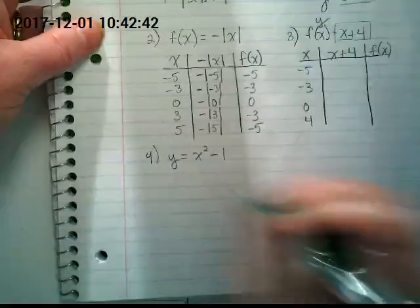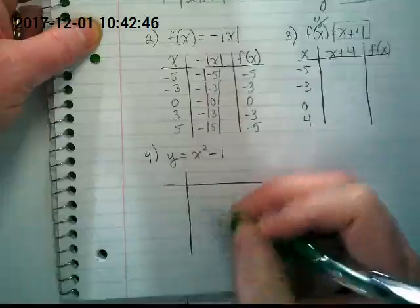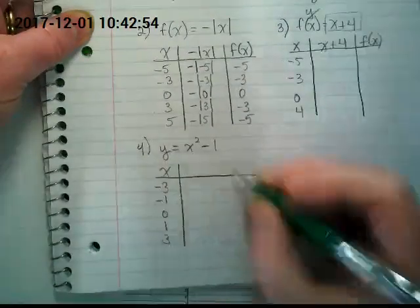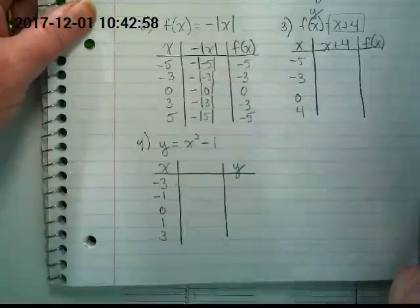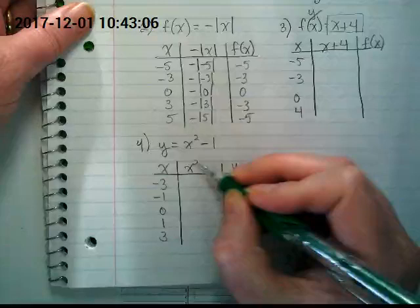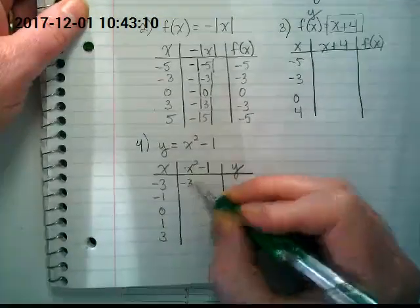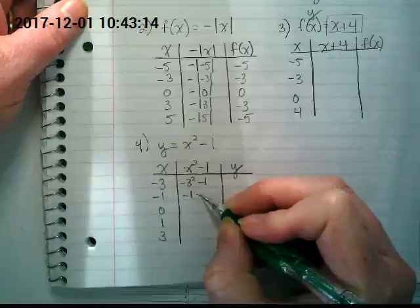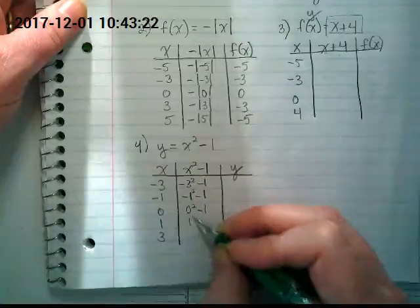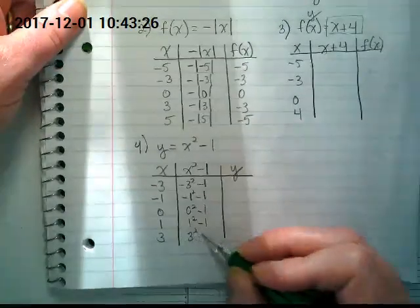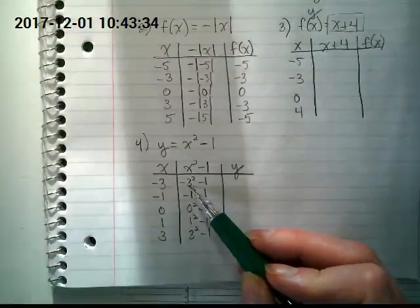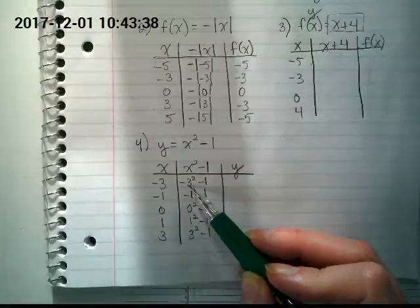I'd like to spend time instead on number 4. The equation is y is equal to x squared minus 1. And it gives us a domain of x values. There's 5 of them. Negative 3, negative 1, 0, 1, 3. We're going to take our rule out of the equation. And what is it? x squared minus 1. So I'm going to put negative 3 squared minus 1. Negative 1 squared minus 1. Oops, I forgot the squared. 0 squared minus 1. 1 squared minus 1. And 3 squared minus 1.